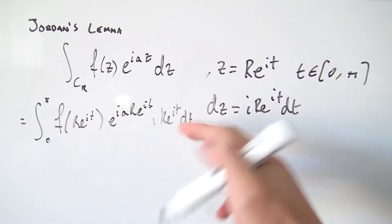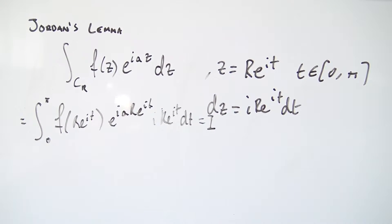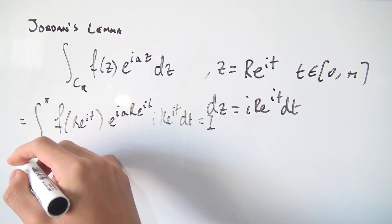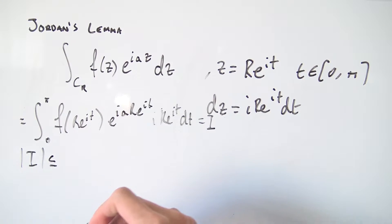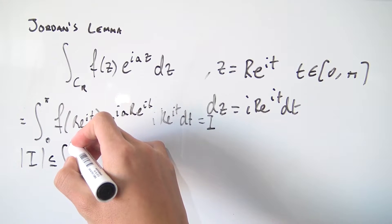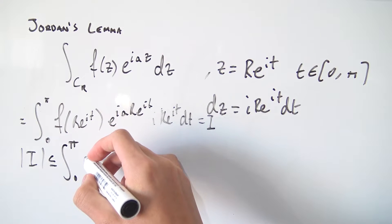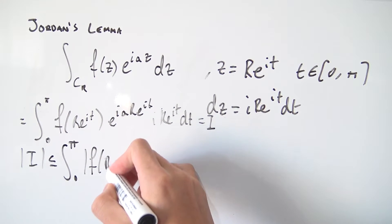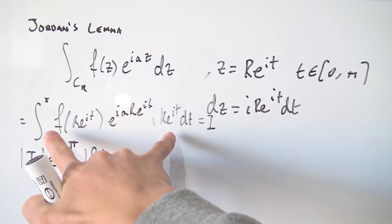Let's call this integral I. What we want to do with I is estimate it — find some kind of upper bound. So if we take the absolute value of I, we can say it's less than or equal to, using the integral inequality, the same integral but of the absolute value. We're bringing the absolute value inside the integral.